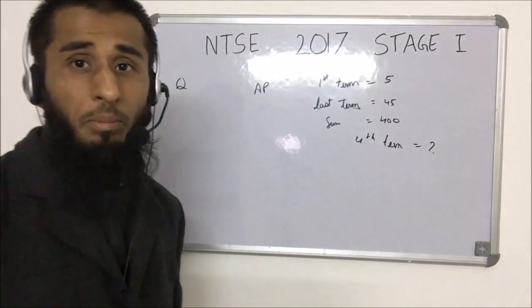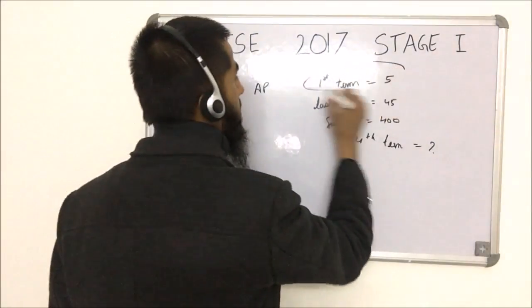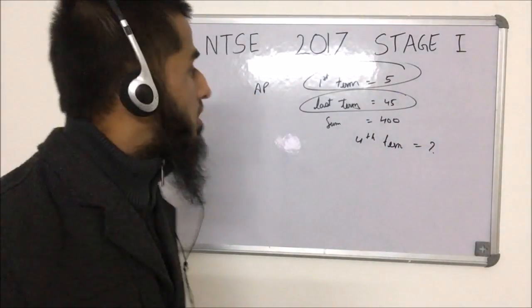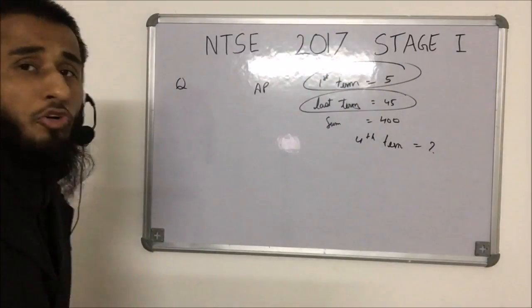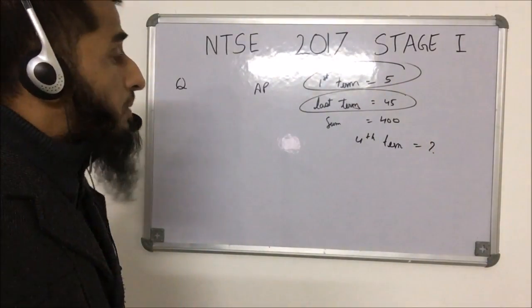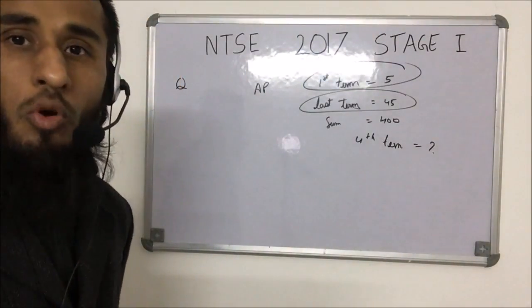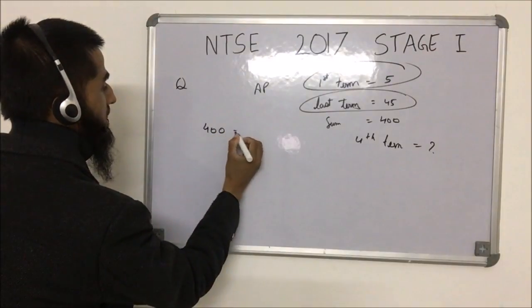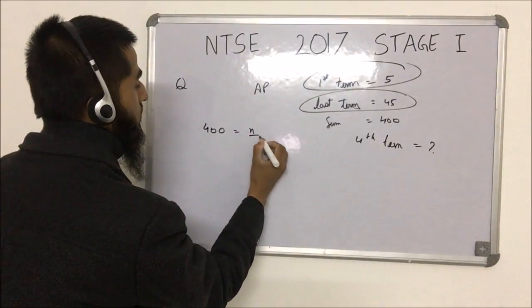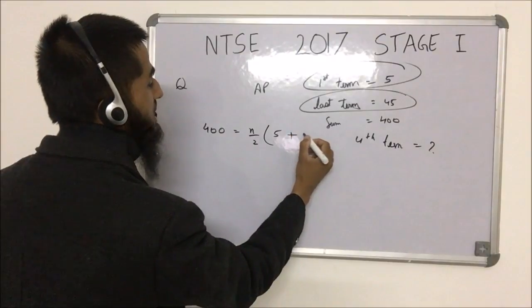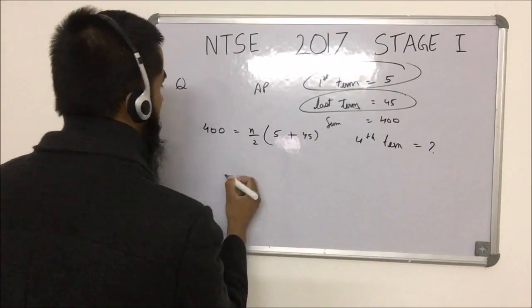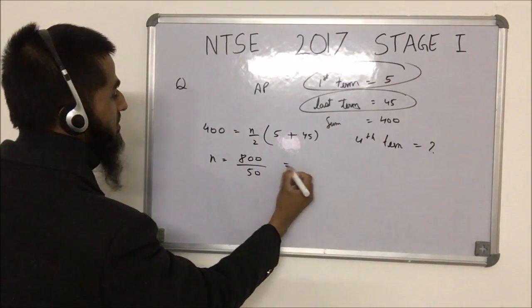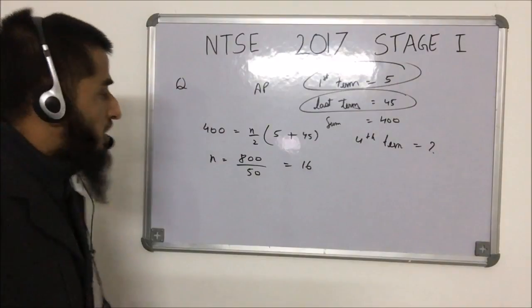This is a simple AP question. The first term is 5, the last term is 45, and the sum is 400. We need to find the fourth term. Applying the sum formula: 400 = n/2 × (5 + 45), so 400 = n/2 × 50, giving n = 16.